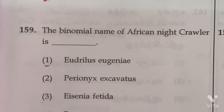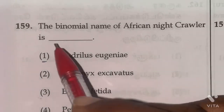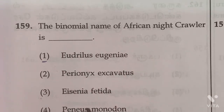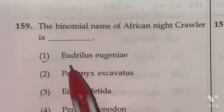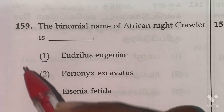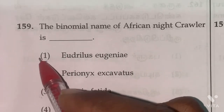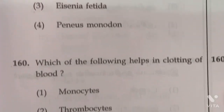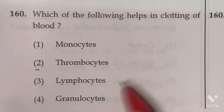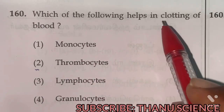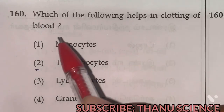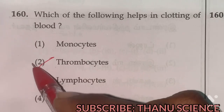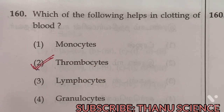Question 159: The binomial name of the African nightcrawler is Eudrilus eugeniae. Option one is the right answer. Question 161: Which of the following helps in the clotting of blood? Thrombocytes. Option two is the right answer. Thank you, students.